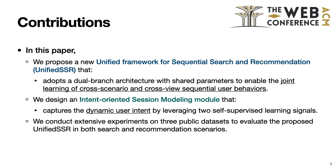In this paper, we propose a unified framework for sequential search and recommendation called Unified SSR, which adopts a dual-branch architecture with shared parameters to enable the joint learning of cross-scenario and cross-view sequential user behaviors. We design an intent-oriented session modeling module that captures dynamic user intent by leveraging two self-supervised learning signals. We conduct extensive experiments on three public datasets to evaluate the proposed Unified SSR in both search and recommendation scenarios.